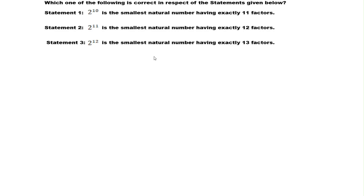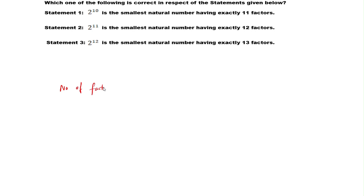Hi, hello, welcome to Learn with Ron. Our today's question is finding the smallest natural number having exactly 11, 12, and 13 factors. Like always, before solving the problem, let us learn the concept of how to find the number of factors of a particular number. Let us learn this concept by taking a number as an example.